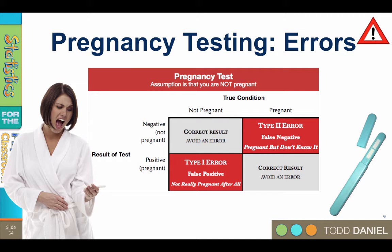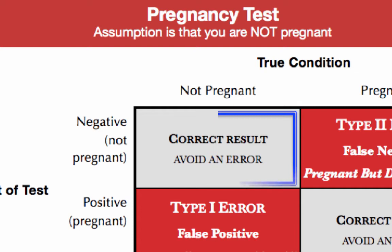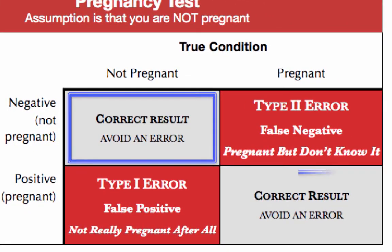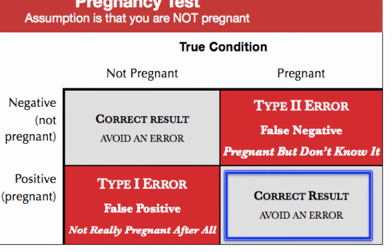If we select a random sample of women and administer pregnancy tests, there are four possibilities. Possibility number one: the test correctly identifies a non-pregnant woman as not pregnant. You're not pregnant, the test says you're not pregnant — correct result. Possibility two: the test correctly identifies a pregnant woman as being pregnant. You are pregnant, the test says that you're pregnant — correct result.